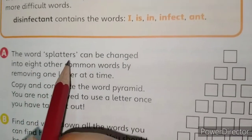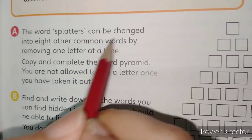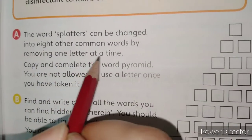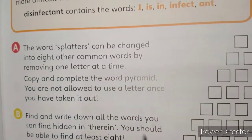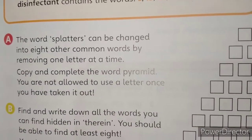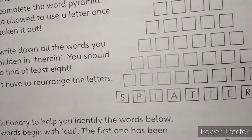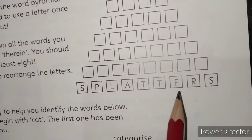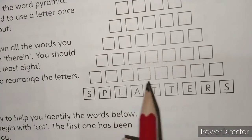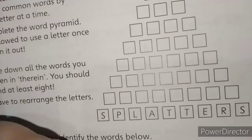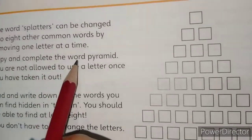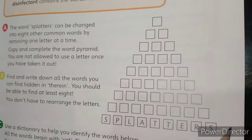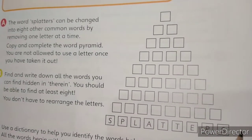The word 'splatter' can be changed into eight other common words by removing one letter at a time. We have 'splatter' here. If we remove one letter at a time, we can find it easier. This means we can copy and complete the word pyramid. A pyramid is called this shape.